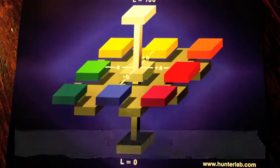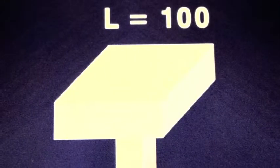The L-axis is a measure of the lightness of your product. On the L-axis, L equals zero is total absorption, whereas pure white would equal 100.